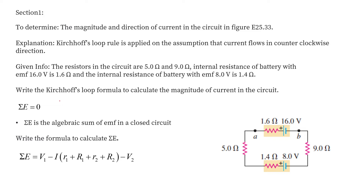Now using this method we apply Kirchhoff's loop law, considering current flowing in the counterclockwise direction. The algebraic sum of EMF in the closed circuit equals zero. Moving from point B in the counterclockwise direction, we go from negative to positive — a potential increase of 16 volts (V1) — minus i times (r1 plus R1 plus r2 plus R2) minus V2, where V2 is 8 volts.